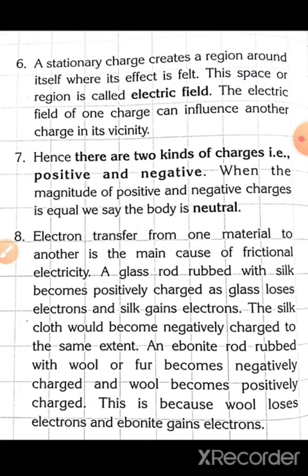There are two kinds of charges: positive and negative. Electrons are negatively charged, protons are positively charged, and neutrons are neutral.